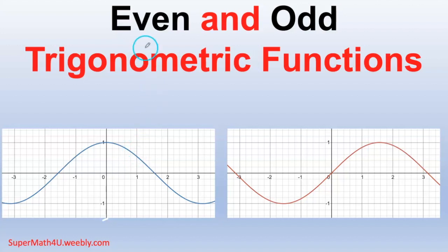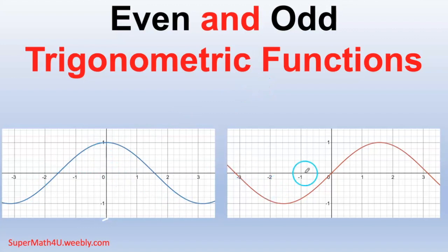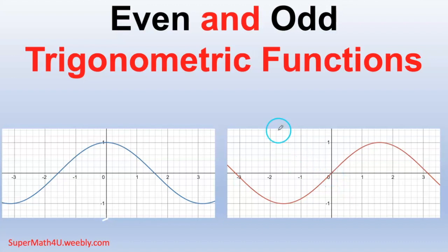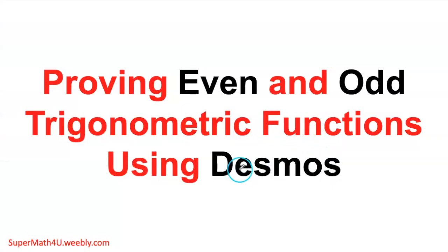Hi guys, this is Mr. Rego, and today we're going to talk about even and odd trigonometric functions. As we can see, we have the graphs — this is my cosine function and this is my sine function. The difference is that one starts at the amplitude and the other one starts at the origin. We're going to graph this right now and use them as a tool to prove even and odd functions.